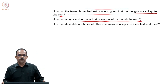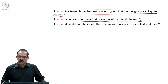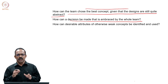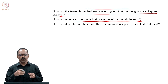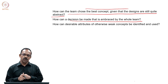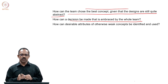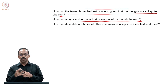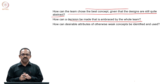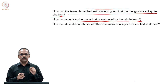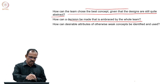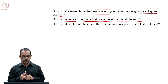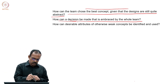How can a decision be made that is embraced by the whole team? When you have a team of people who developed the concepts, each person will have a preference for one or two concepts over others — mainly because of their contribution in developing that concept or because they felt it was the best way to solve the problem. When choosing the best concept, you cannot have one selection from each team member. You need consensus among team members.